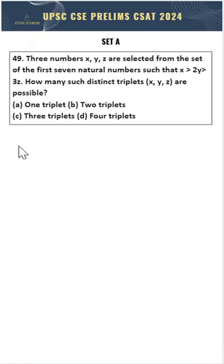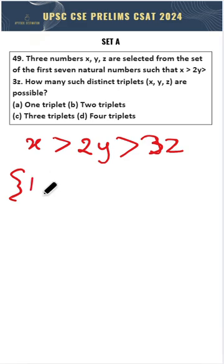Three numbers x, y and z are selected from the set of seven natural numbers. So we have x is greater than 2y, which is greater than 3z, where they can take only values from 1 to 7.